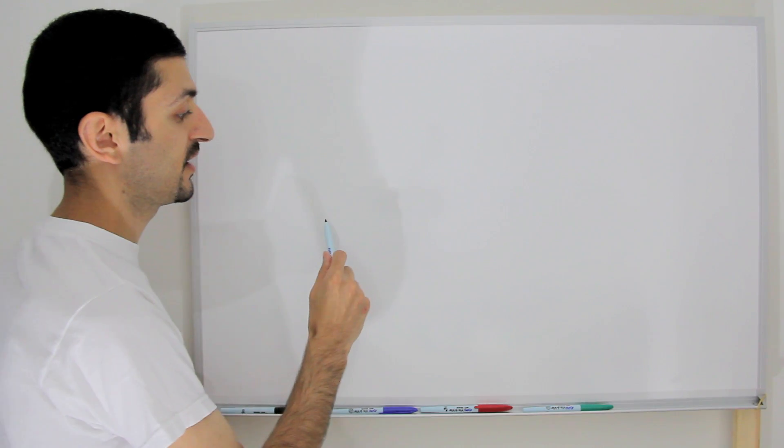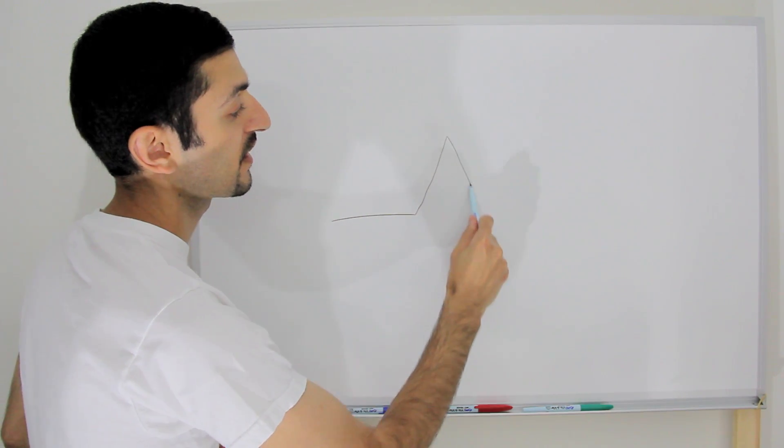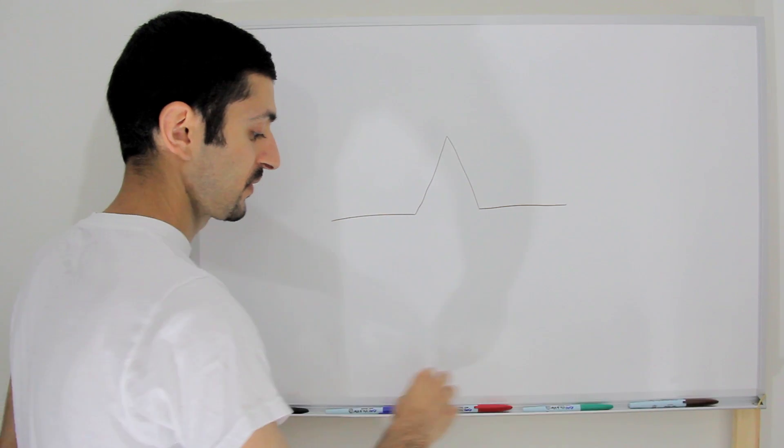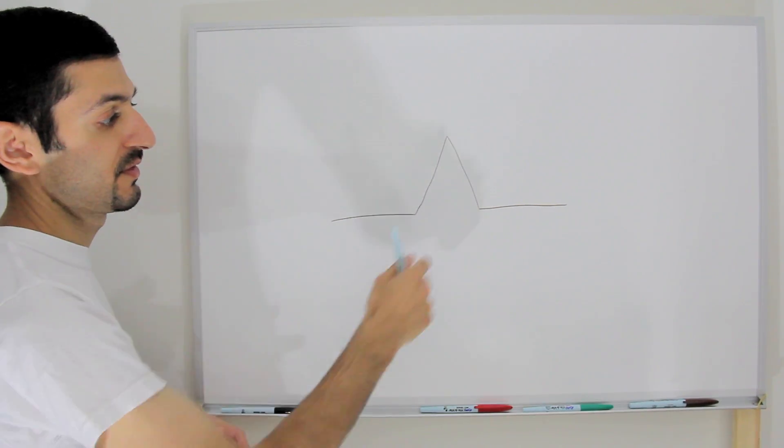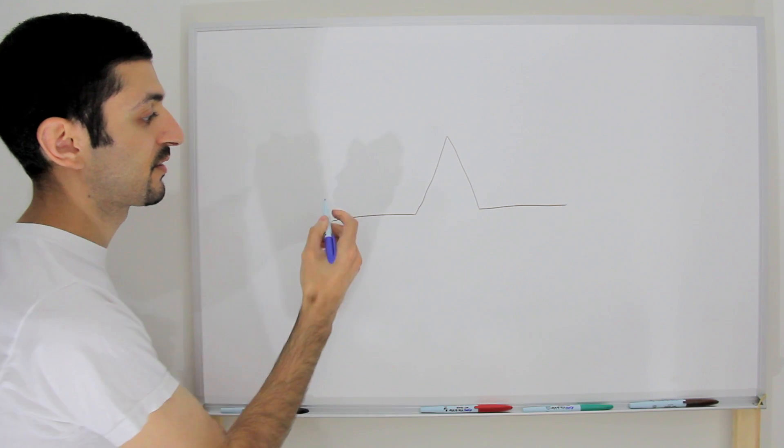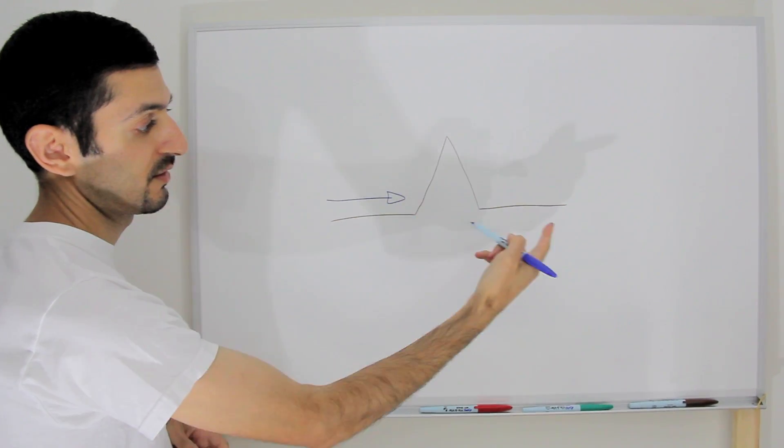Now what happens when air is moving and it interacts with a mountain? There's a mountain range, for example, being in the way of air that's trying to move in that direction.